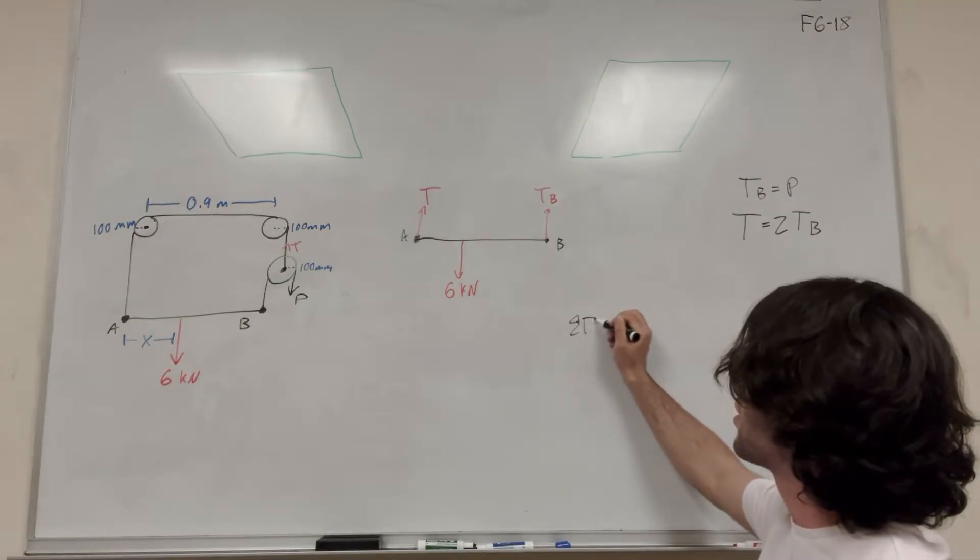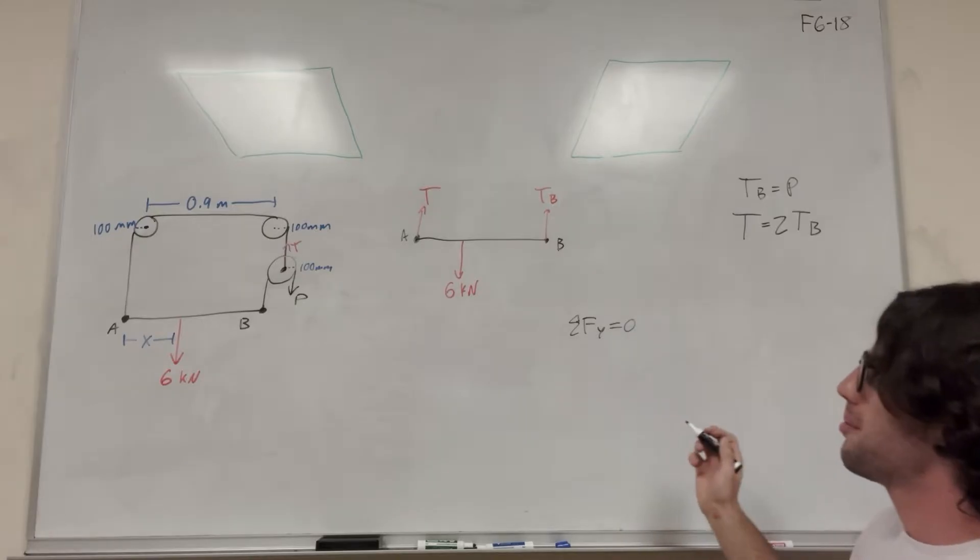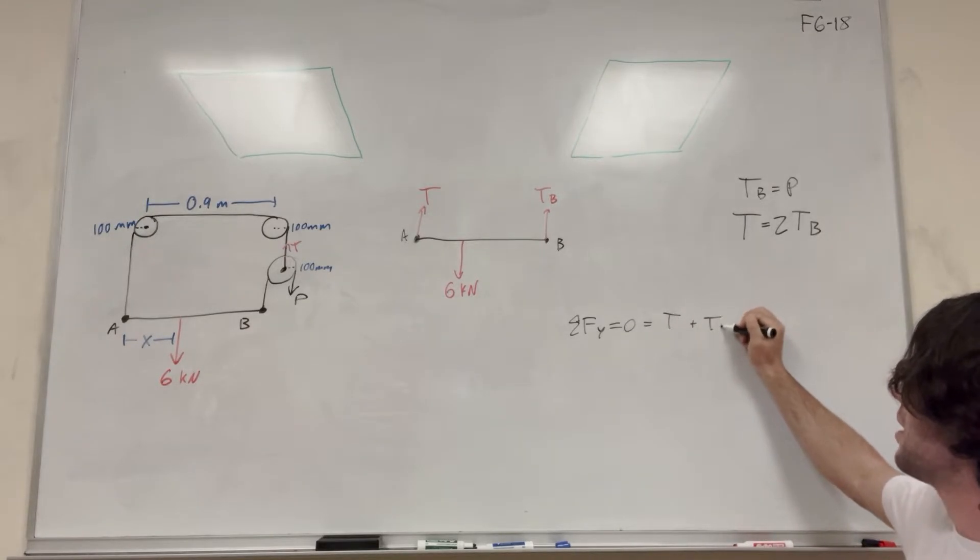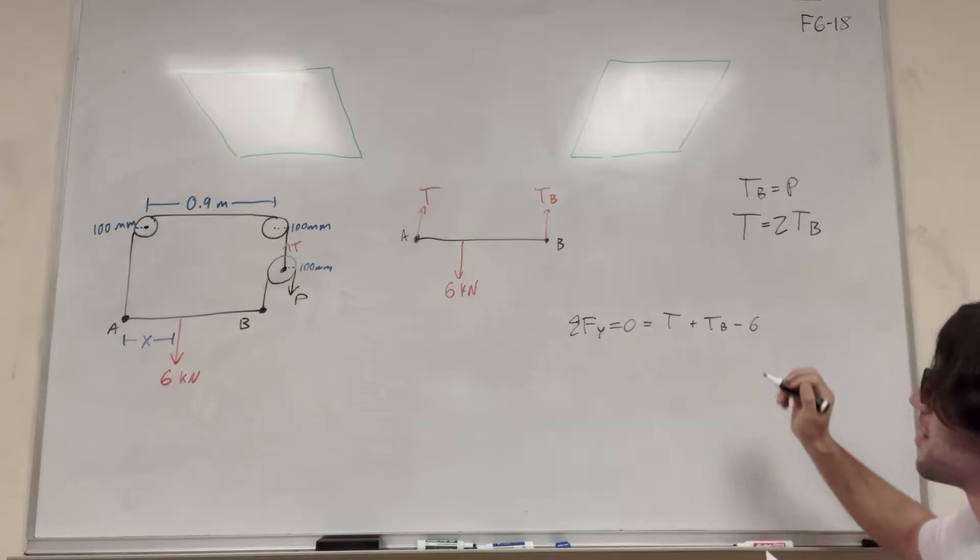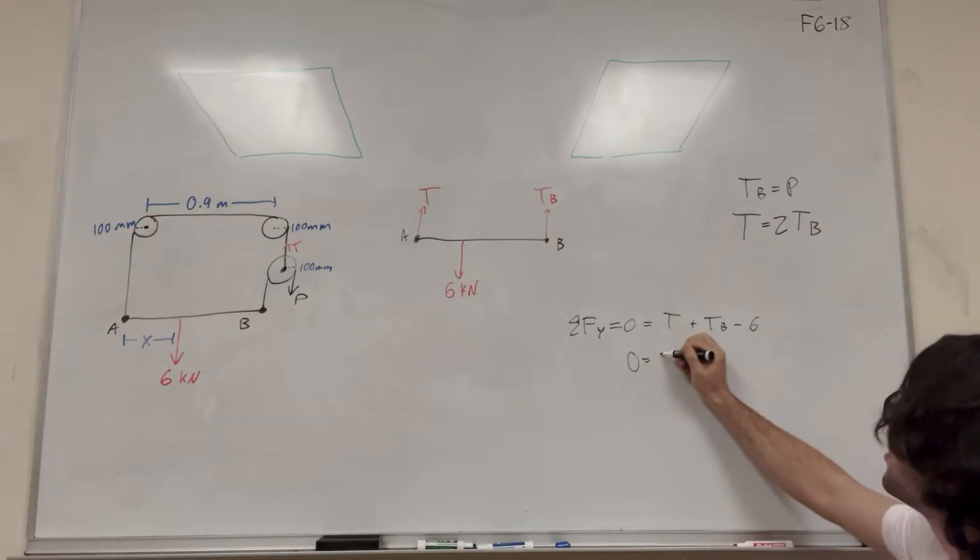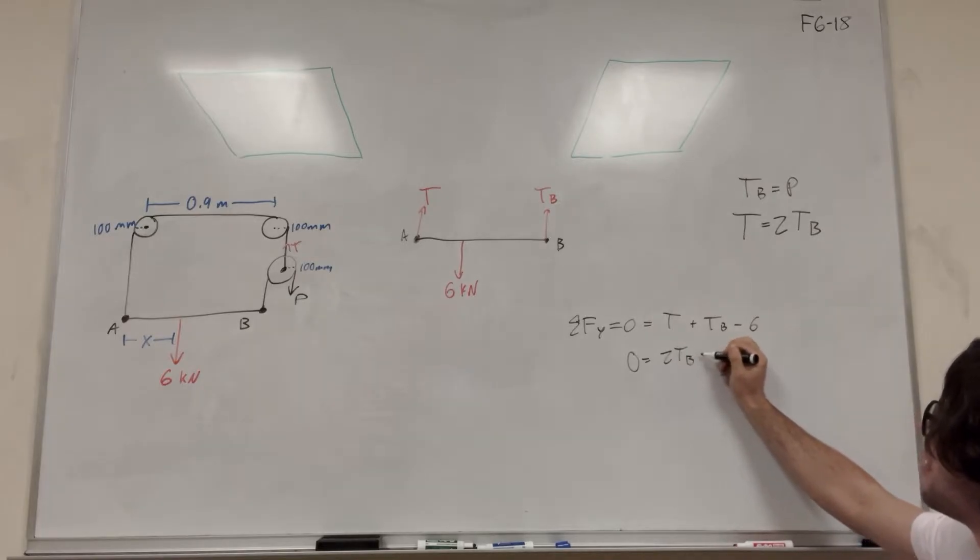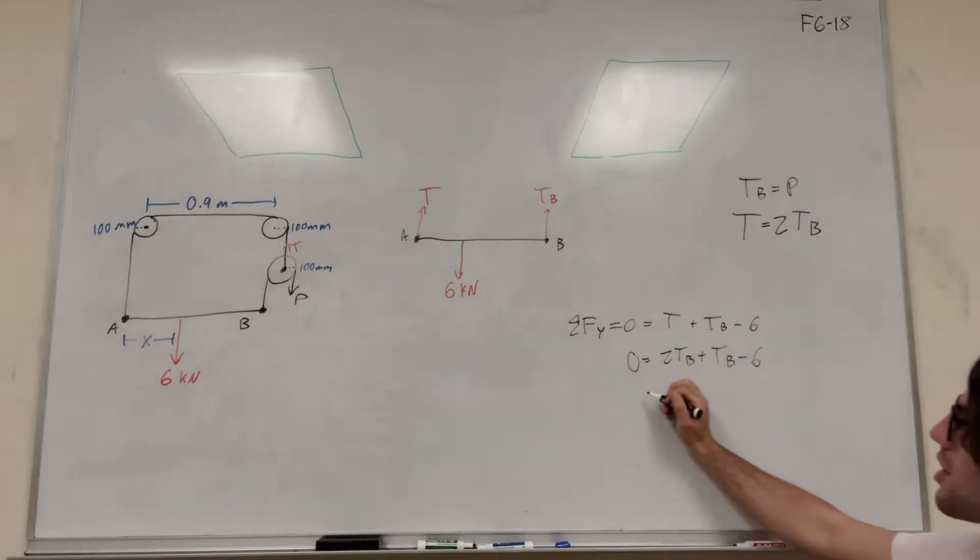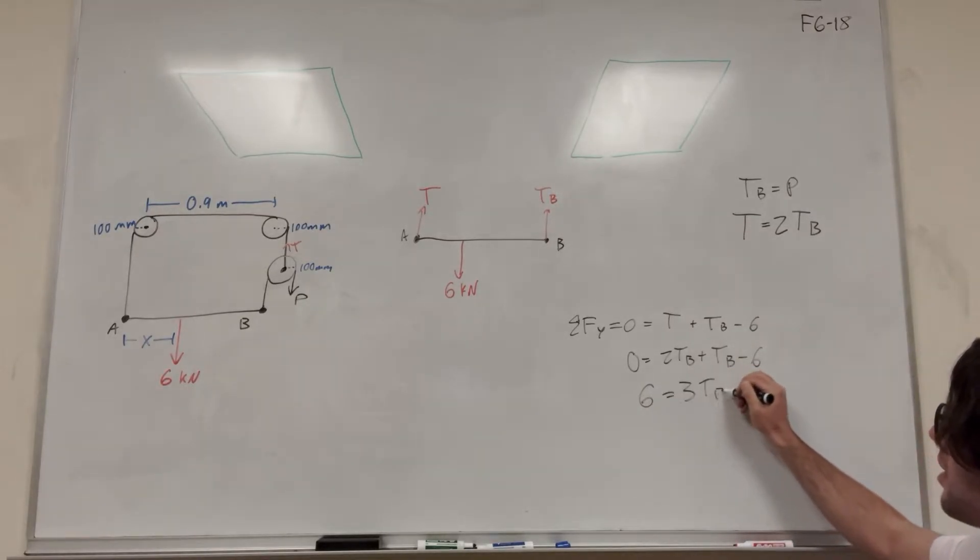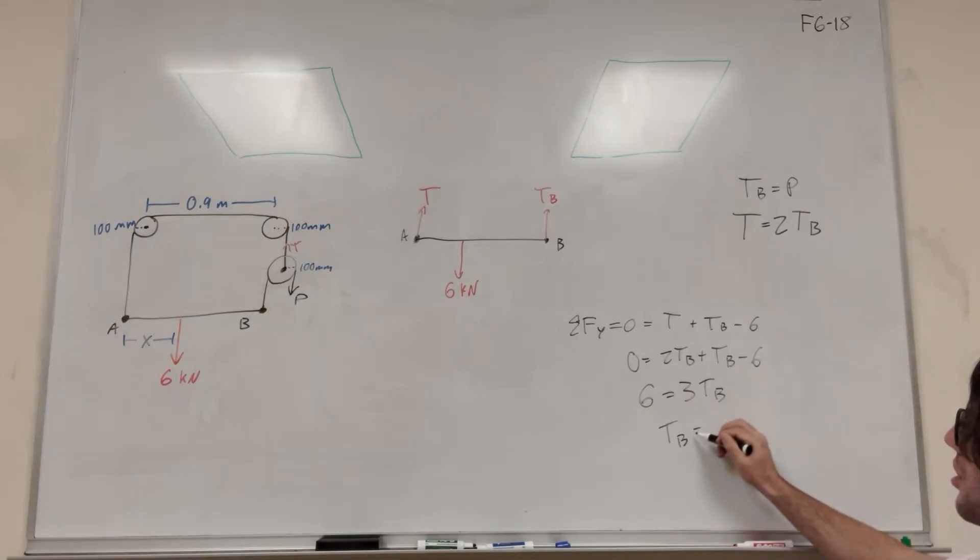So sum of the forces in the y is equal to 0, we're at equilibrium, right? That's equal to tension, the big T, plus tension of B, minus 6. But then we have this equation here, right? Tension is equal to 2 times tension of B. So let's put that into here. So 0 is equal to 2 tension of B, plus tension of B, minus 6. So combining these terms and moving the 6 over, we get 6 is equal to 3 tension of B. And then tension of B is equal to 2.